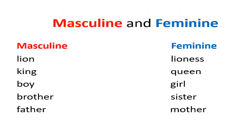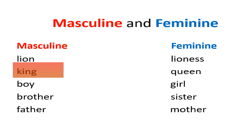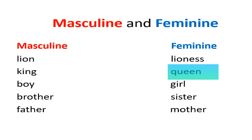Some more examples of masculine and feminine for your better understanding. First is lion — lion is a wild animal and all of you are well aware of it. Its feminine noun is lioness. Now come to the next: king. You might have seen a king in cartoon movies wearing a crown and ruling over a country. Its feminine noun is queen.